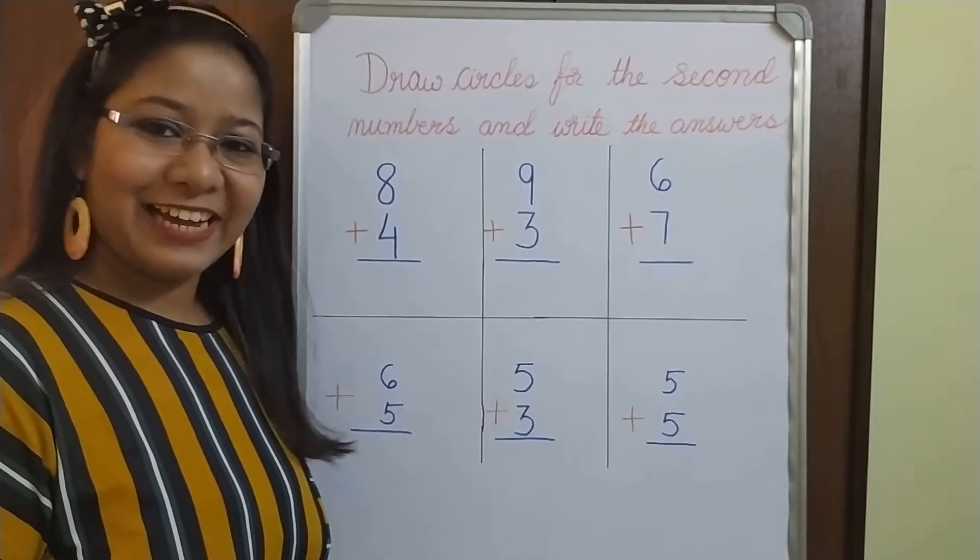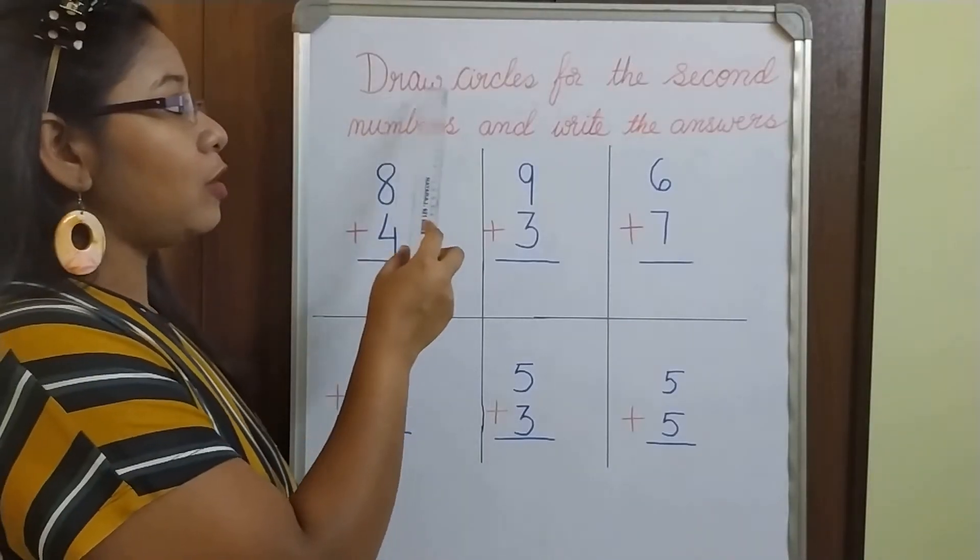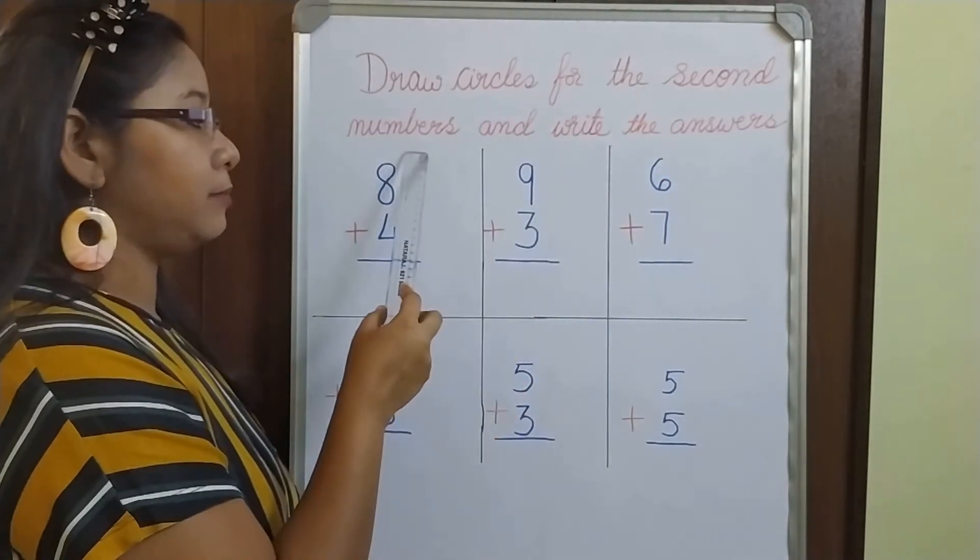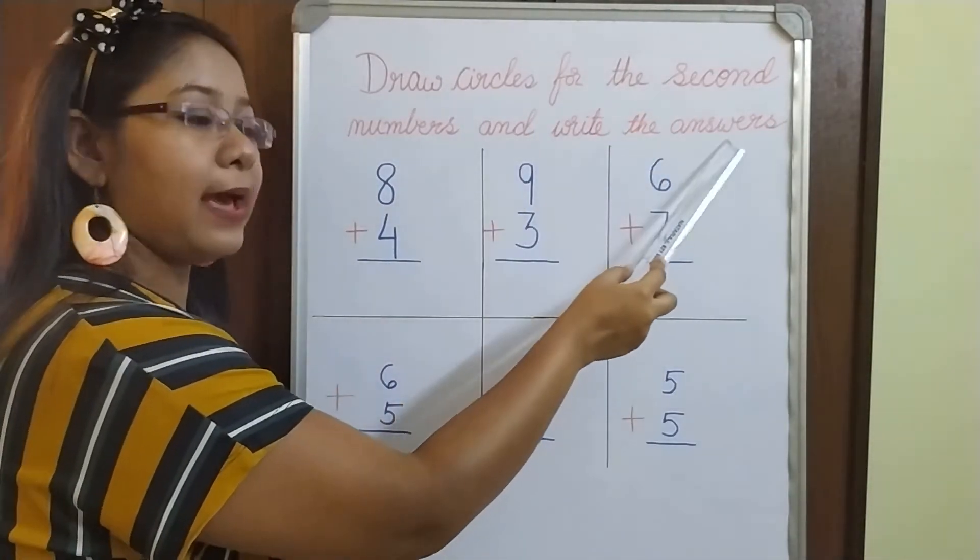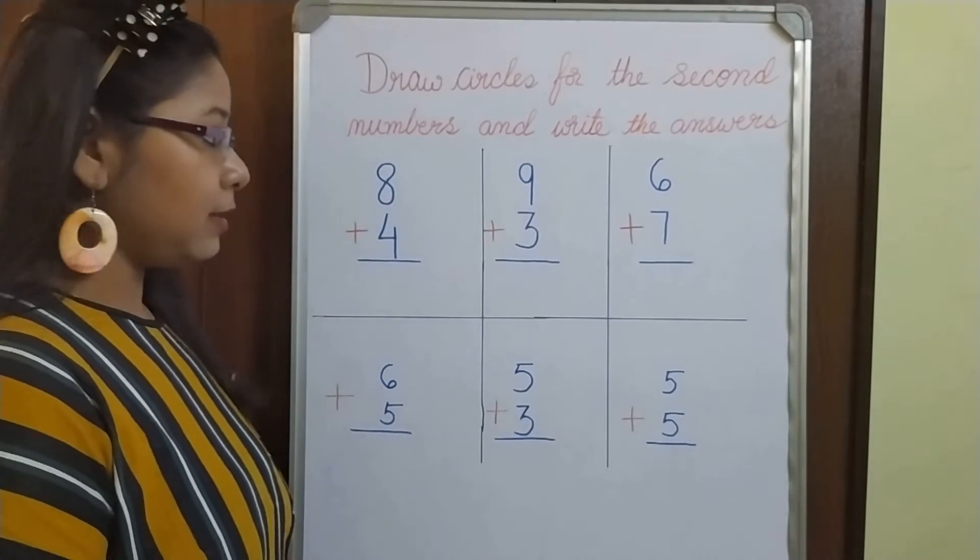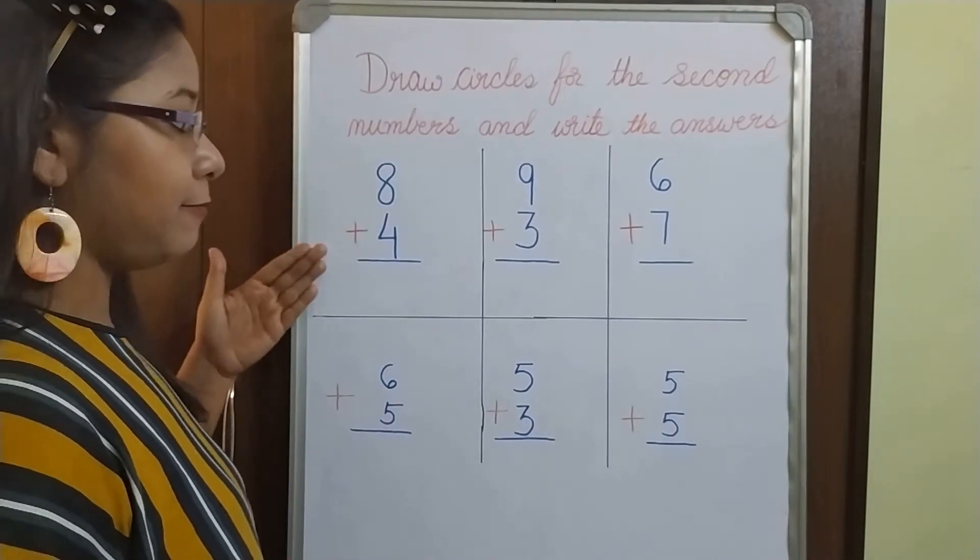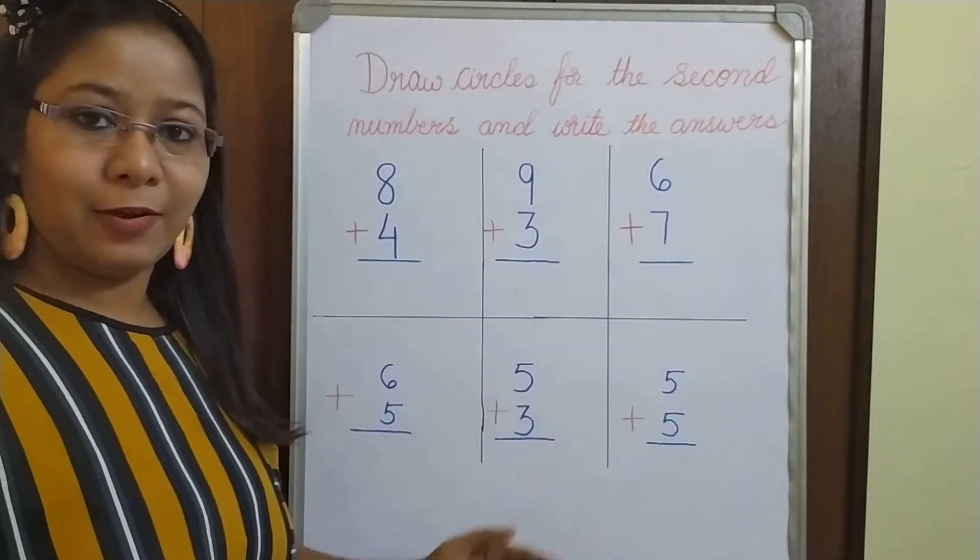Our next activity is draw circles for the second numbers and write the answers. Here you can see that I have written some addition numbers. Right?